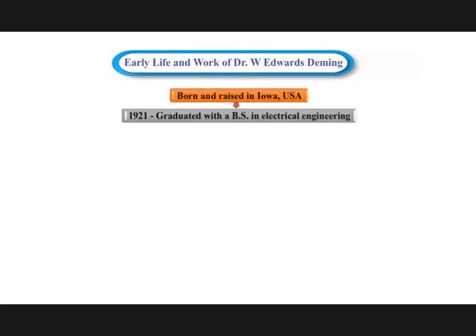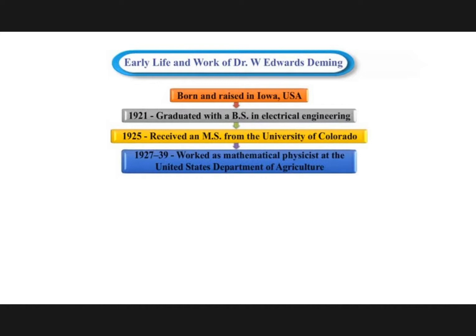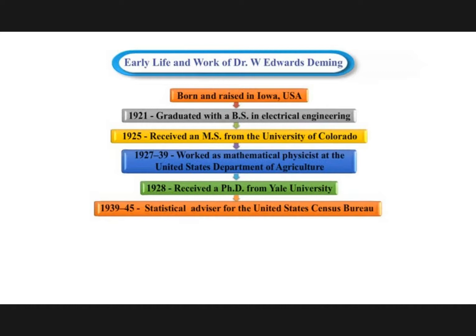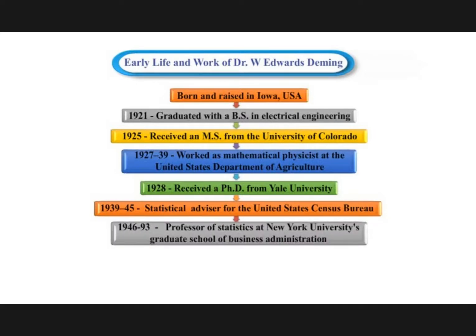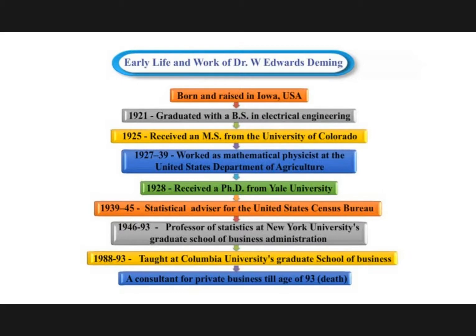Dr. W. Edwards Deming was born and raised in Iowa, USA. In 1921 he graduated with a B.S. in Electrical Engineering, in 1925 received an M.S. from the University of Colorado, and in 1928 received a Ph.D. from Yale University. From 1927 to 1939 he worked as a Mathematical Physicist at the United States Department of Agriculture. From 1939 to 1945 he served as Statistical Advisor for the United States Census Bureau. From 1946 to 1993 he was Professor of Statistics at New York University's Graduate School of Business Administration, and from 1988 to 1993 also taught at Columbia University's Graduate School of Business, consulting for private business until the age of 93.